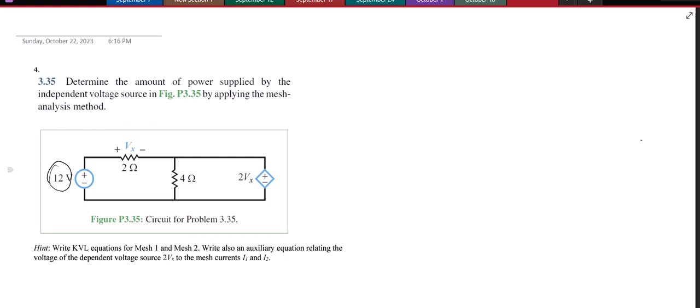So for the mesh analysis method it's a lot like KVL but it's not identical because branches that are shared by two meshes will have the current going through them will actually be a combination of our two mesh currents.